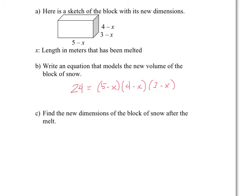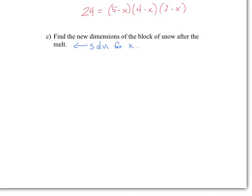Find the dimensions of the block of snow after it's melted — basically, solve for X. To start, I'm going to expand all of this. It currently equals 24, so I'll bring everything to the same side, make it equal to zero, and then factor. I'm going to start over here on the left-hand side, so I'll have 24 equals... I'm going to start multiplying these things together.